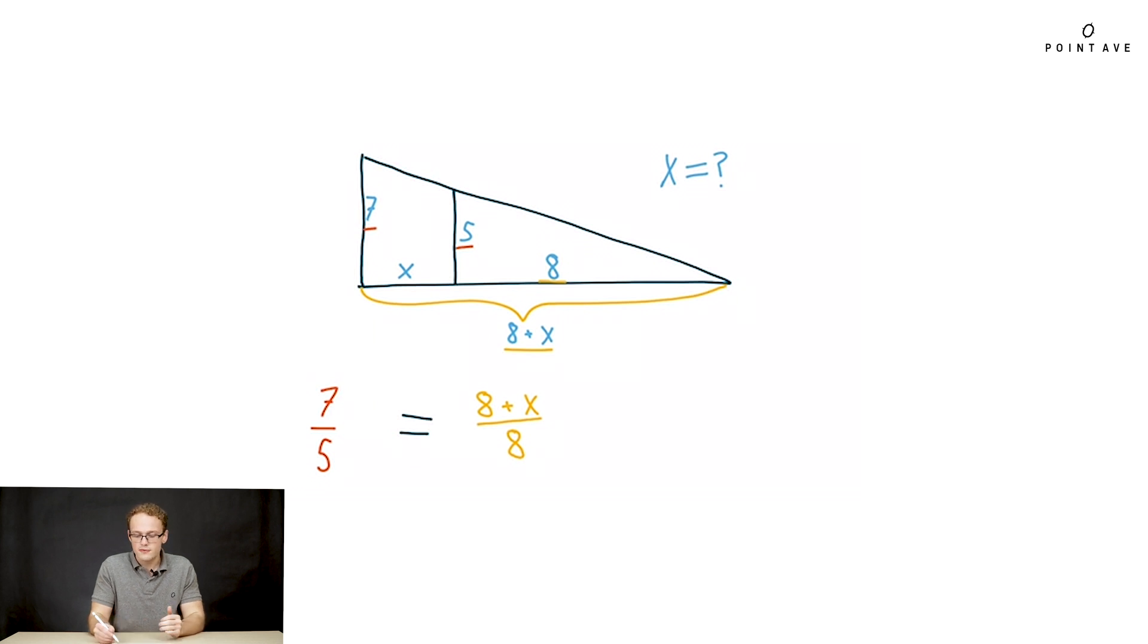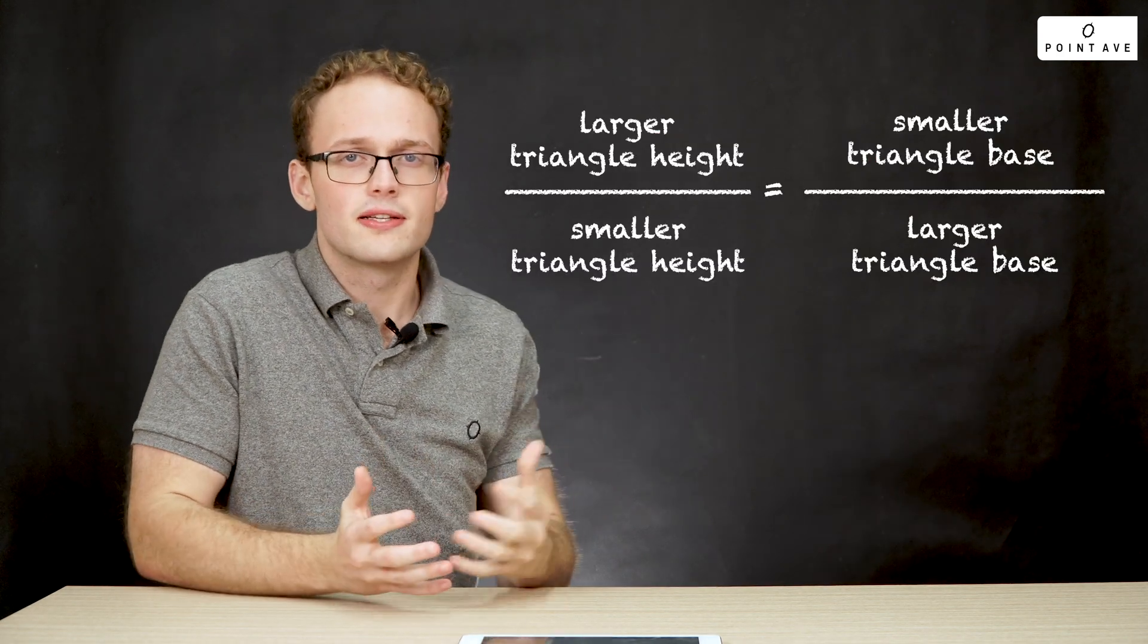But what if we were to instead flip it and say 8 over 8 plus x? Would this be correct? Can you spot any error? So what we've actually done is instead of putting the larger triangle over the smaller triangle to match the left hand side, we've mixed it up and put the smaller triangle over the larger triangle. Now this is an error that we need to look out for. So how do we fix it?